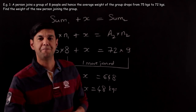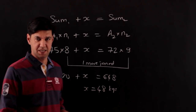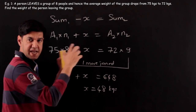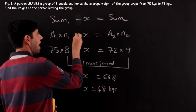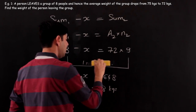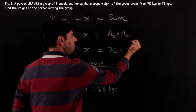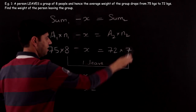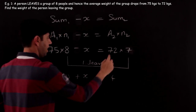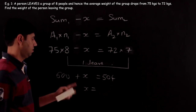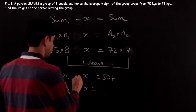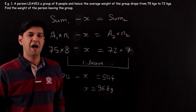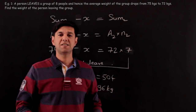Had the situation been that a person leaves the group, all that changes is a minus sign — something is taken away from the sum. At the same time, since one person has left, the number of people becomes 7, not 8. So the equation becomes 75 × 8 − x = 72 × 7, giving 600 − x = 504, so x = 96 kg.